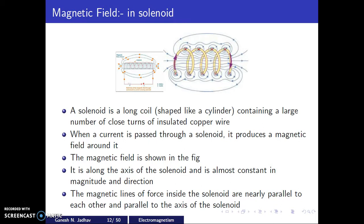A solenoid is a long coil shaped like a cylinder containing a large number of closely wound turns of insulated copper wire. When a current is passed through the solenoid, it produces a magnetic field around it. The field is along the axis of the solenoid and is of almost constant magnitude and direction.